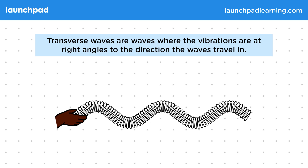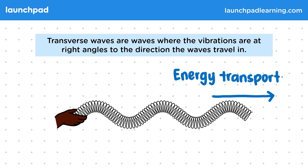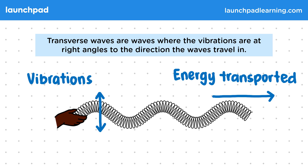But why is this a transverse wave? Well first we should recall that waves are used to transport energy without transporting matter. In this case the wave is transporting kinetic energy from our hand in this direction. The spring itself isn't being transported in this direction though. The coils instead move up and down in this direction. The fact that the vibrations creating the wave are perpendicular to the direction it transports energy is what makes this a transverse wave.